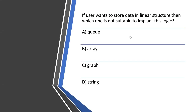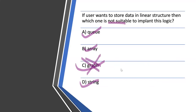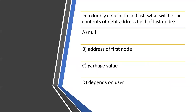Next is a data structures question: if a user wants to store data in a linear structure, which option is NOT suitable? Queue is linear, linked list is linear, array is linear, and a string can also be considered linear. However, a graph is not linear — it is a non-linear, network-type data structure. So the answer is graph, as it is not suitable for storing data in a linear structure.